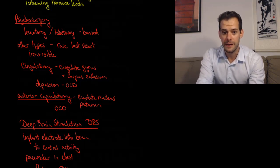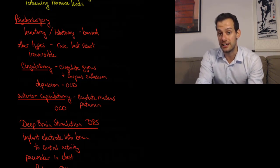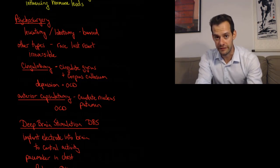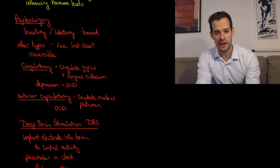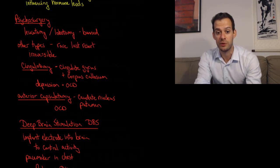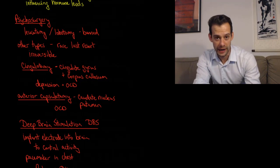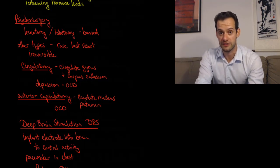One type of psychosurgery still in use today is what's called the cingulotomy. This involves destroying some of the connections between the cingulate gyrus and the corpus callosum, and this can be used in severe, sort of last resort cases of depression and obsessive-compulsive disorder. Another procedure that's used is the anterior capsulotomy. This involves connections between the caudate nucleus and the putamen, and this can be used for severe, intractable cases of obsessive-compulsive disorder.